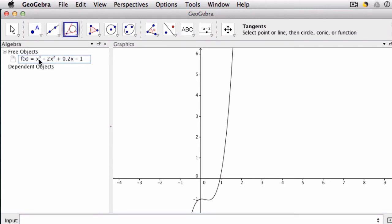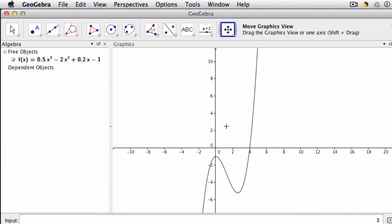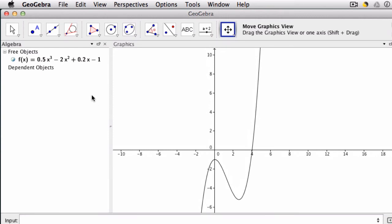What if I made this first coefficient smaller, like 0.5? And then here, they can see if I do that, the shape changes in some interesting way.